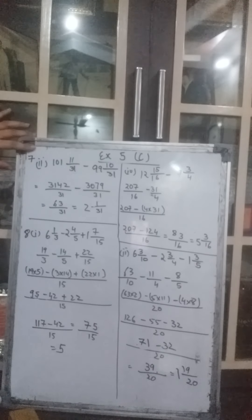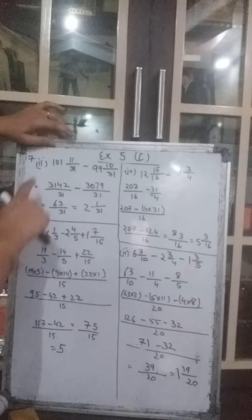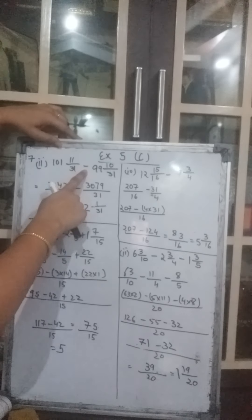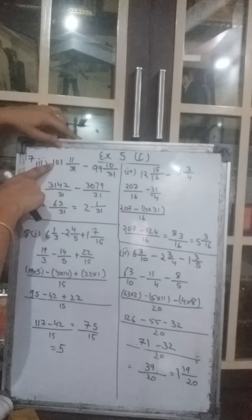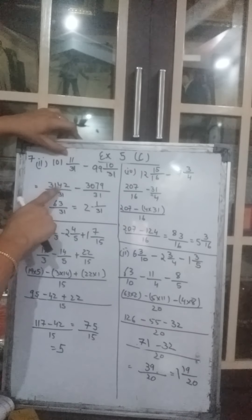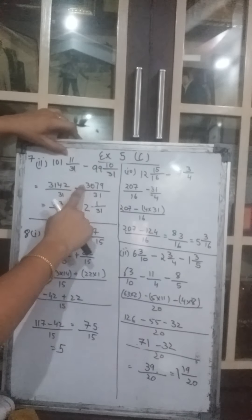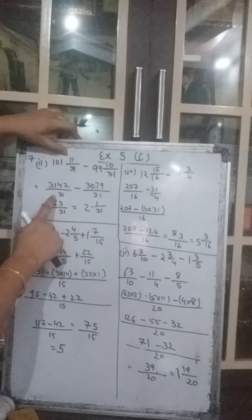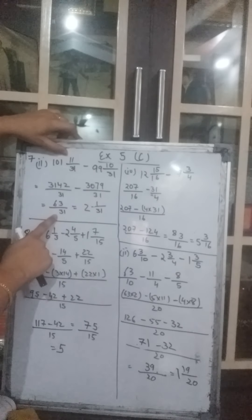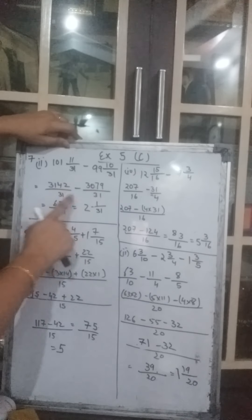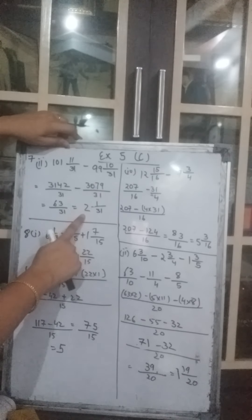Now we come to the 7th question. We will do the 2nd and 4th parts. The 2nd part says 101 whole 11 upon 31 minus 99 whole 10 upon 31. First convert to improper fractions: 31 multiplied by 101 plus 11 gives 3142 upon 31, minus 31 multiplied by 99 plus 10 gives 3079 upon 31. Since the denominator is the same, no need to take LCM — simply subtract the numerators. The answer is 63 upon 31. They cannot be simplified, so we convert to mixed fraction: 2 whole 1 upon 31.